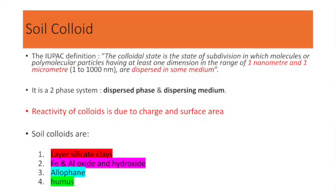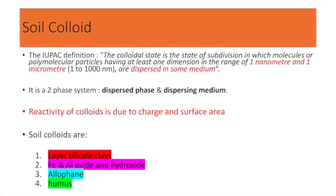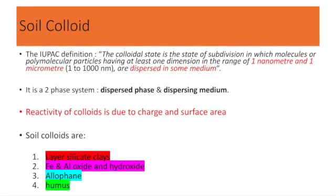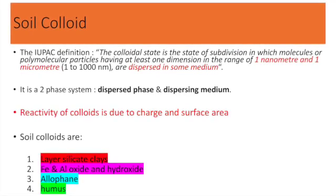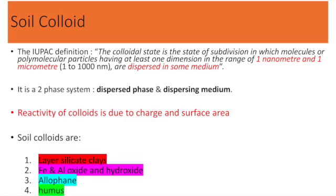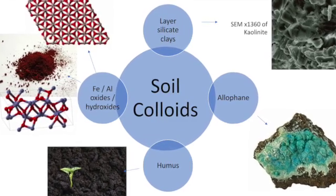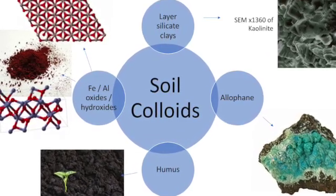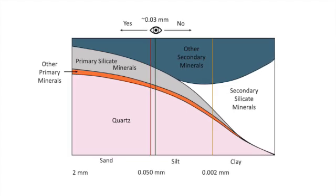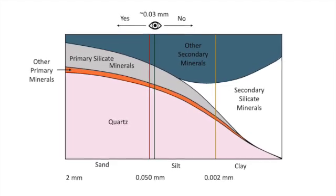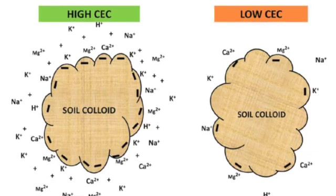Let us now refresh our understanding of what a colloid is. The colloidal state is the state of subdivision in which molecules or polymolecular particles have at least one dimension in the range of one nanometer to one micrometer and are dispersed in some medium. Soil fits into this definition of colloid, and hence we have soil colloids. There are four soil colloids: layer silicate clays, iron and aluminium oxides and hydroxides, allophane and imogolite, and humus. The sand size fraction, predominantly quartz, gives the skeleton to the soil, whereas the clay size fraction is home to the soil colloids.